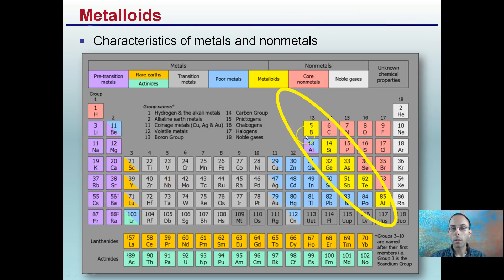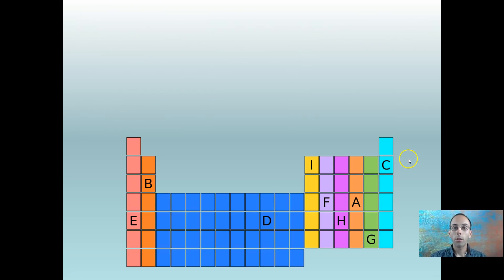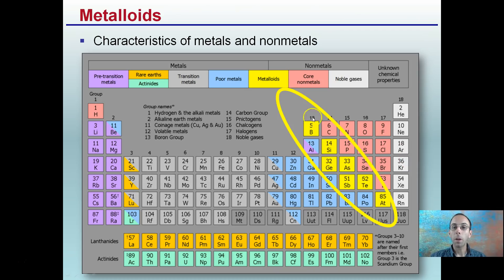Our metalloids are again located right here — these are the yellow elements in this particular periodic table as presented. The metalloids kind of share properties that border both metals and non-metals, but I'm not going to spend a lot of time on those in this lecture.